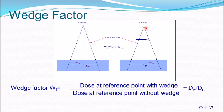When a physical wedge is used in the radiation beam, it attenuates the radiation reaching the patient. To account for this, a wedge factor is applied: wedge factor = dose at reference point with wedge / dose at reference point without wedge. Linac or cobalt units typically come with four wedge angles: 15°, 30°, 45°, and 60°, and the wedge factor must be determined for each.